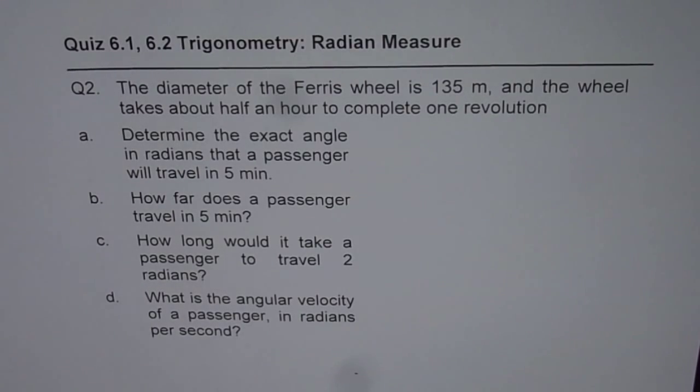I'm Anil Kumar and here is question number two on the quiz trigonometry radian measurements. The diameter of a Ferris wheel is 135 meters and the wheel takes about half an hour to complete one revolution.